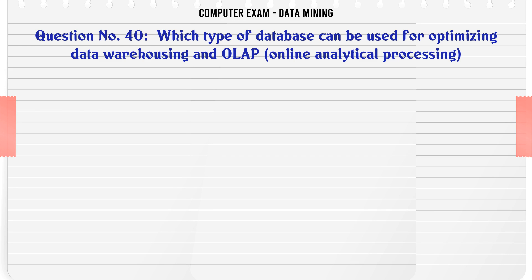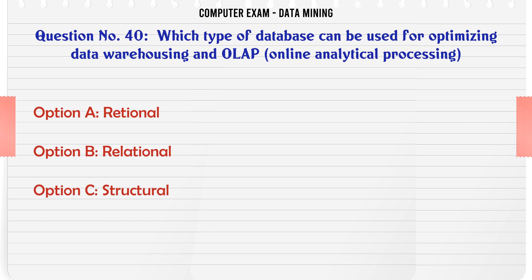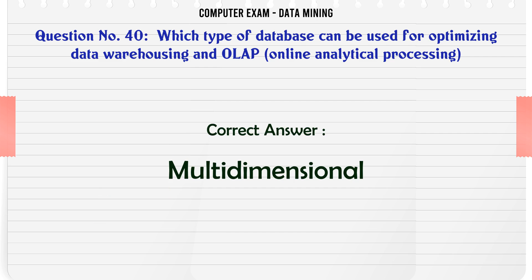Which type of database can be used for optimizing data warehousing and OLAP (online analytical processing)? A. Regional. B. Relational. C. Structural. D. Multidimensional. The correct answer is Multidimensional.